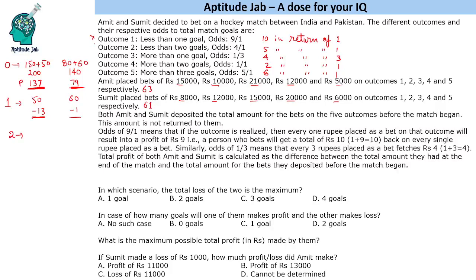If there are two goals, outcomes one and two will be false and only outcome three will be true. The odds give four in return of three, so if Amit bet 21,000 on that outcome he gets back 28,000, and if Sumit bet 15,000 he gets back 20,000. Since they each bet 63,000 and 61,000 total, Amit has a loss of 35,000 and Sumit has a loss of 41,000. For three goals, two outcomes are true with a return of 2 in return of 1, so from 12,000 Amit gets 24,000, resulting in a loss of 11,000, and Sumit gets 40,000 back, resulting in a loss of 1,000.